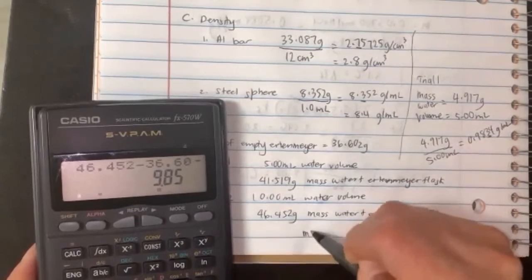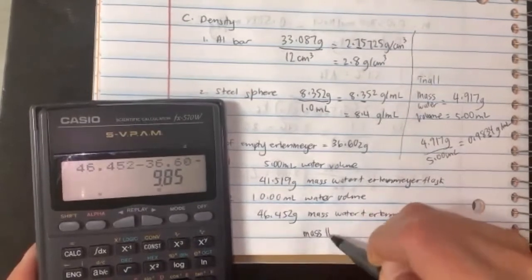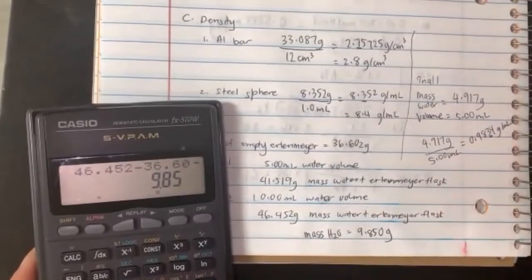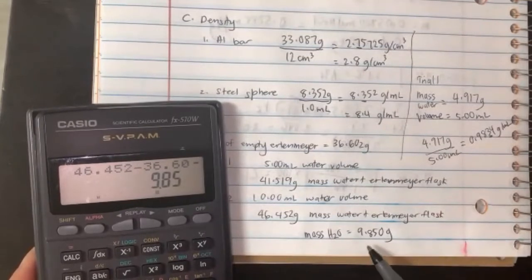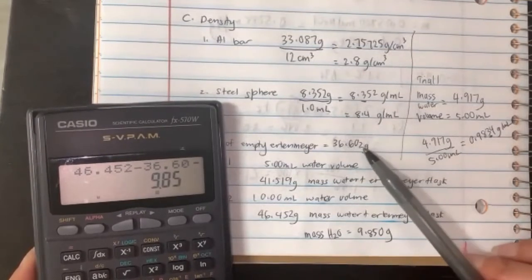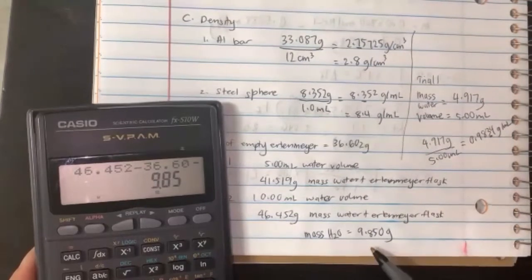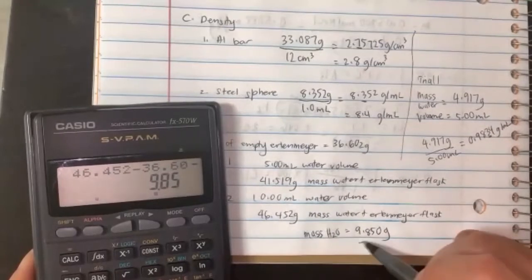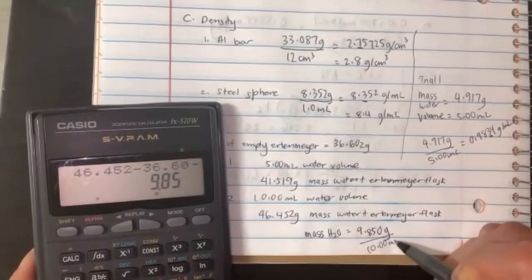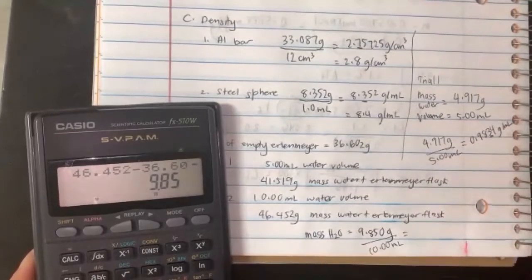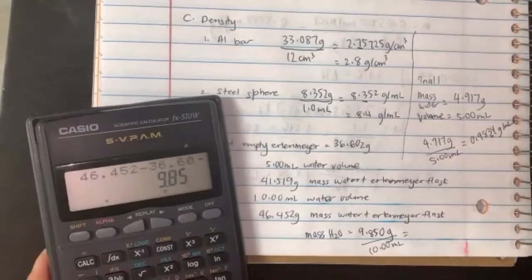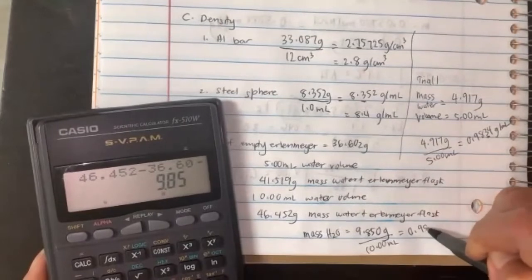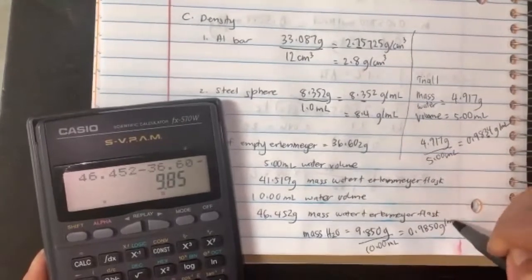Calculators don't always keep sig figs correctly—you need to remember when we subtract, we keep decimal places. 9.850 grams divided by the volume, which is 10 milliliters. This time both are four sig figs, so you'll keep all four. 9.850 divided by 10 gives 0.9850 grams per milliliter.